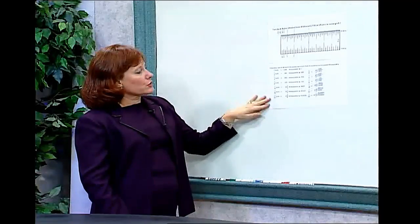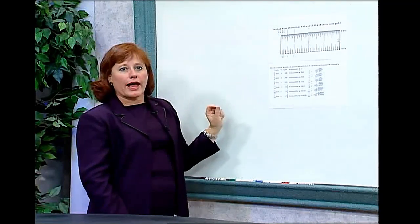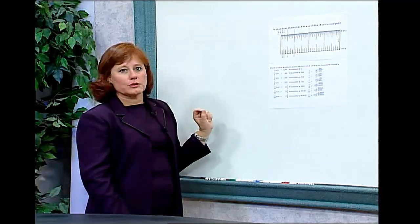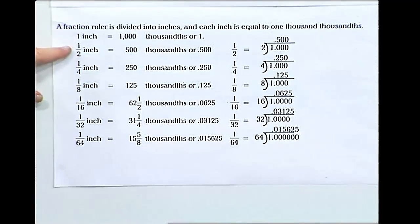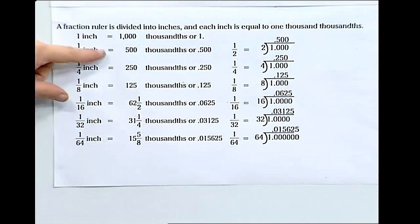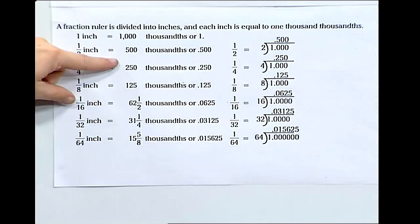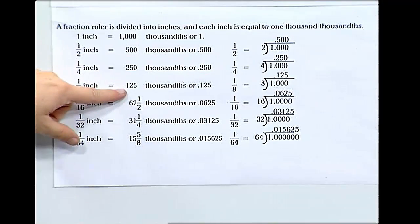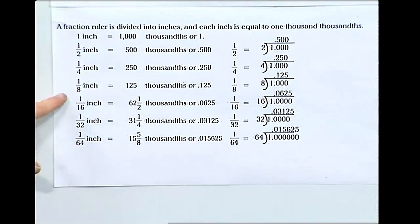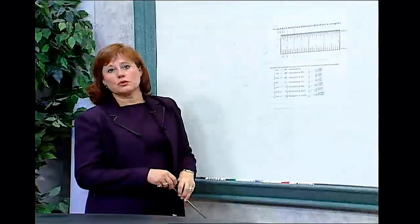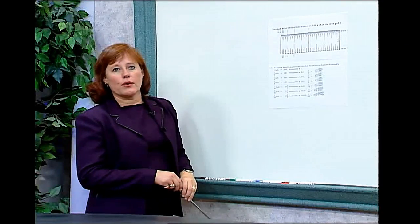Each time as we go down this chart, we're dividing the space into a half again as small space. We go from one inch to one half inch to one quarter inch. When we divide that space in half, we're talking about an eighth of an inch. Just as when we divide this number two hundred fifty thousandths, it becomes one hundred twenty-five thousandths. An eighth of an inch is equal to one hundred twenty-five thousandths of an inch or .125.